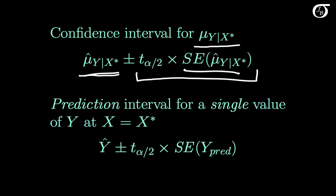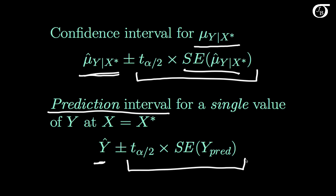When predicting a single value, we use different terminology — we don't talk about confidence intervals, we talk about prediction intervals. We create confidence intervals for parameters, and when we're predicting a single value that's not a parameter, we call it a prediction interval. The idea is very similar: we take our best prediction and add and subtract a margin of error — a t value times the standard error of the predicted value. In both cases, the degrees of freedom for that t are simply n minus 2, the regular degrees of freedom for simple linear regression.